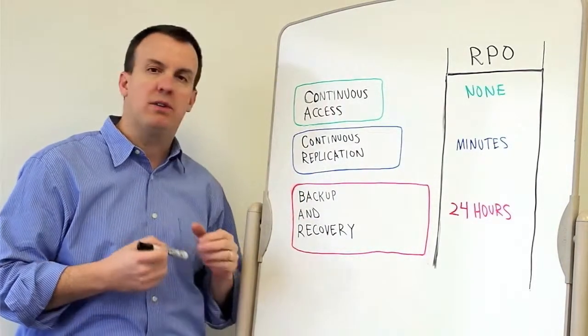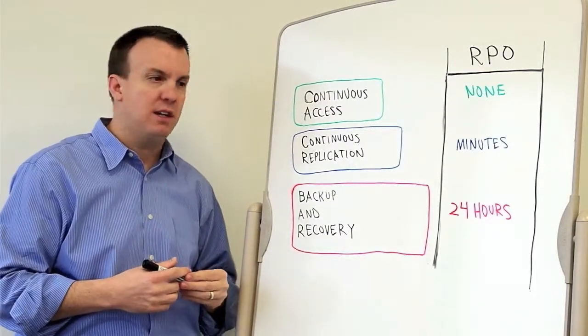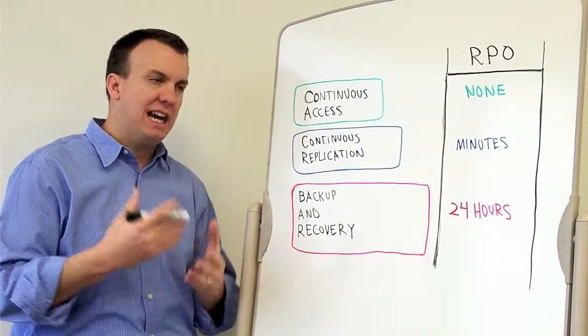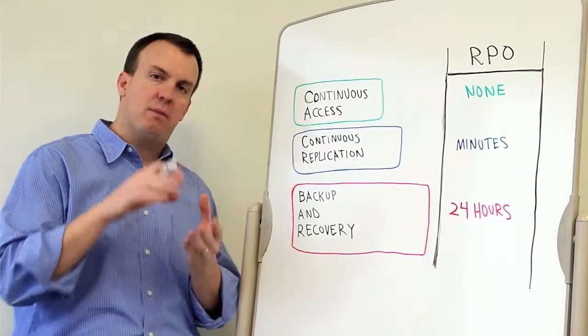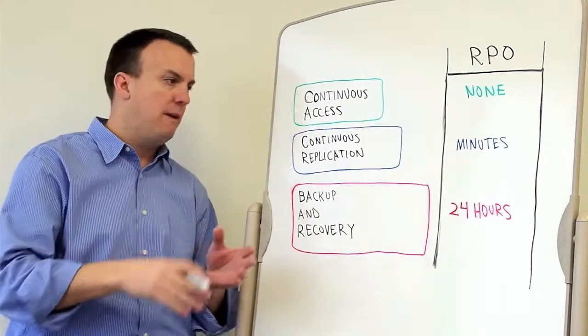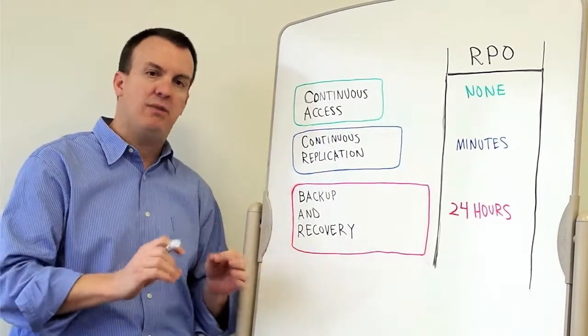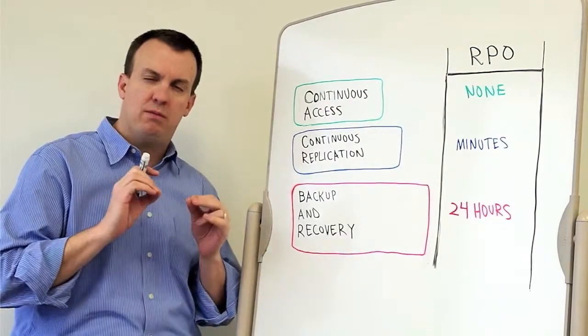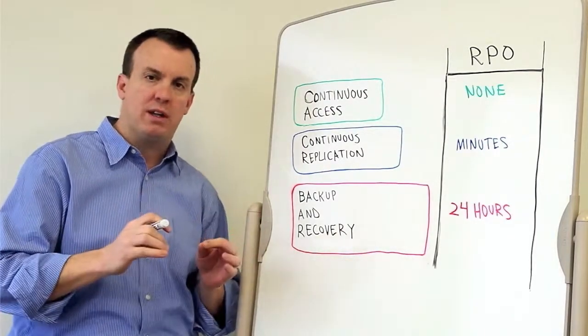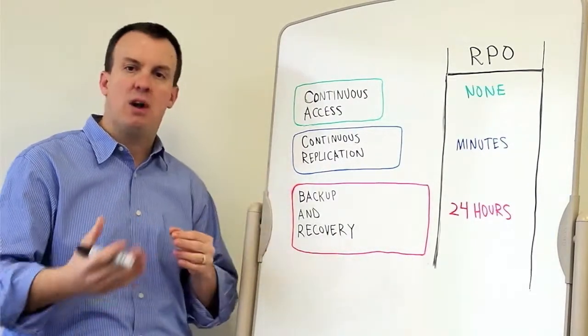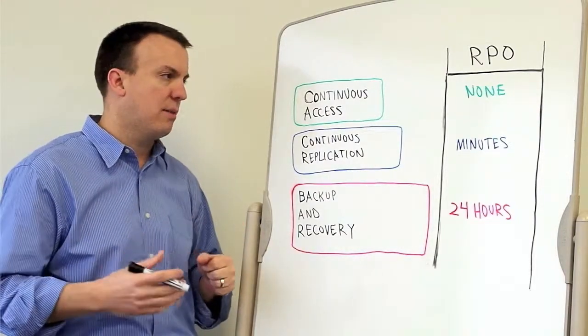Continuous replication is really built on our RecoverPoint technology, and what that does is it captures all information that comes from a server into the storage, and it splits that out, saves it into a journal, so it can be rewound and replayed very quickly. It's very DVR-like is one way to think about it.